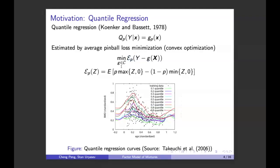Another method — quantile regression — has a problem formulation that looks like least square regression, except the error is the pinball loss, which is a piecewise linear function. By choosing a probability or confidence level p and minimizing the residual error, we obtain a model for the conditional quantiles. Since we have to choose p, it looks reasonable to vary p from zero to one to obtain all conditional quantile models, giving us the entire conditional quantile function.